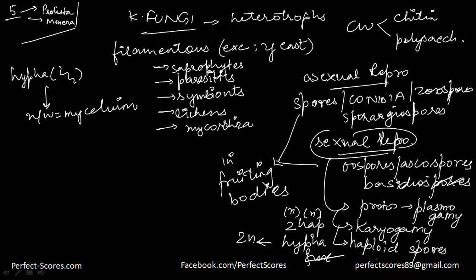In some kinds of fungi there is an intervening dikaryotic stage — that means two nuclei are present but in only one cell. Such a condition is called a dikaryon. So two nuclei exist in one cell, meaning they are still not fused together, and that is called the dikaryophase of the fungus. Afterwards those nuclei fuse together and the cells become diploid instead of haploid.